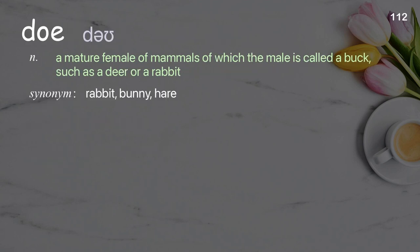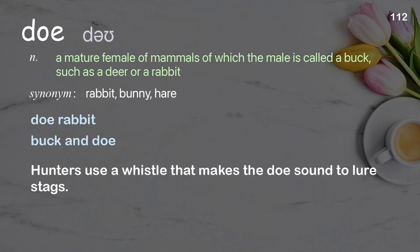Doe: a mature female of mammals of which the male is called a buck, such as a deer or a rabbit. Examples: doe rabbit; buck and doe. Hunters use a whistle that makes the doe sound to lure stags.